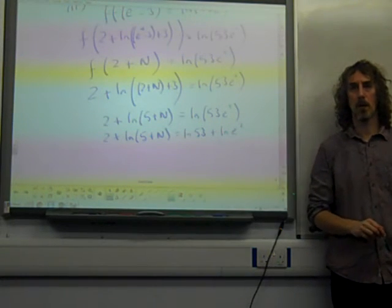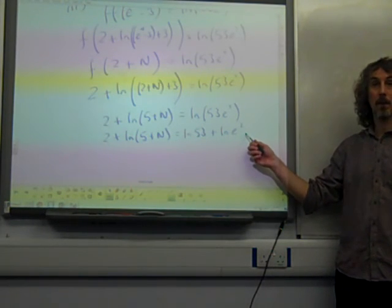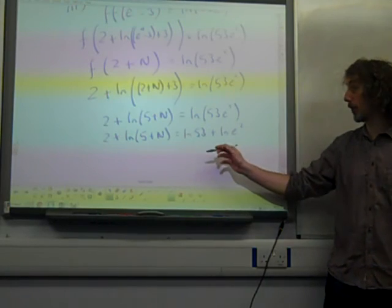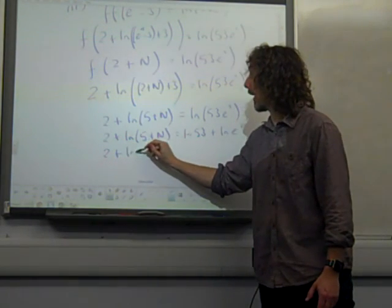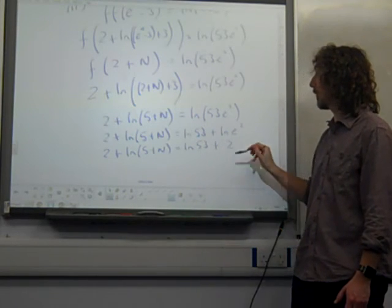Now the right-hand side is natural log of 53 e squared. That's the natural log of 53 plus the natural log of e squared. Remember that's how logs work. And we notice the natural log of e squared, that's twice the natural log of e. So that's just 2.